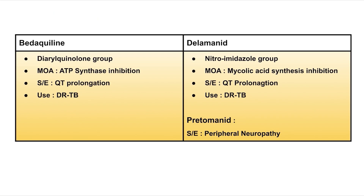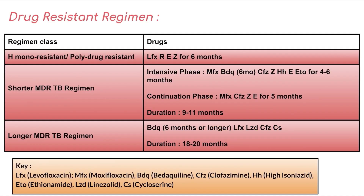Regarding newer drugs: bedaquiline is a diarylquinoline; its mechanism of action is ATP synthase inhibition — a potential exam question — with a side effect of QT prolongation, used in drug-resistant TB. Delamanid and pretomanid are both nitroimidazole group drugs; mechanism of action is mycolic acid synthesis inhibition; side effect is also QT prolongation; used in drug-resistant TB. Additionally, pretomanid has peripheral neuropathy as a side effect, differentiating it from delamanid.